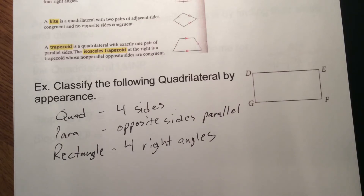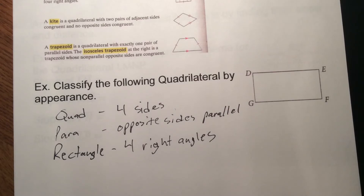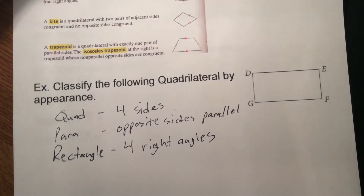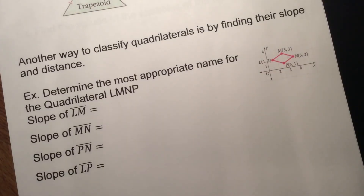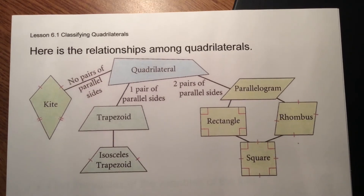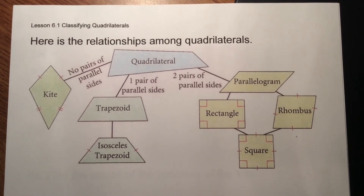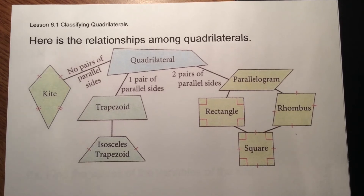So this figure can be called a quadrilateral, a parallelogram, and a rectangle. When you do this on your homework, you need to list all of these. As long as it has four sides it's a quadrilateral, then look for those other features. Here's how all the quadrilaterals fit together.